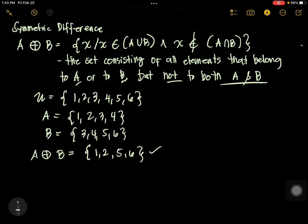What does it mean? We are going to cancel 3 and 4. And what is left is 1, 2, 5, 6. So in symmetric difference, you are going to write the elements that are not common to both. Not common to both — so that is symmetric difference.